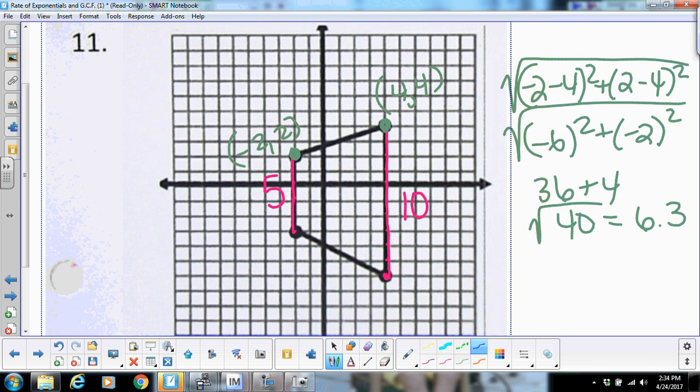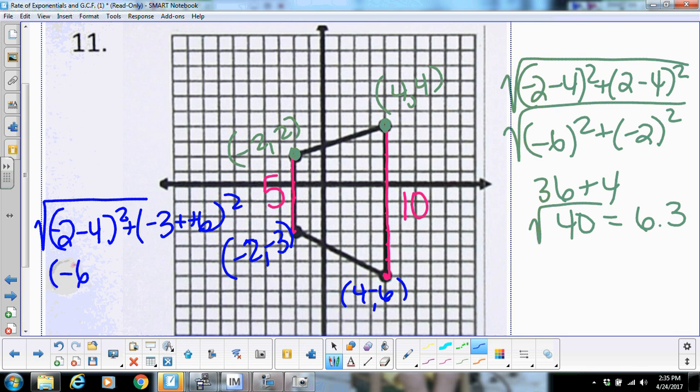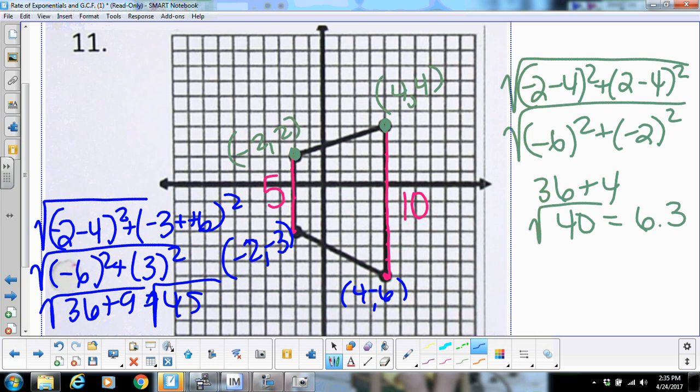And I'm going to do the same thing over here. This is going to be negative 2, negative 3. And this is going to be 4, negative 6. So the distance formula there is going to be negative 2 minus 4 squared plus negative 3 minus negative 6 squared. So that's going to give me negative 6 and 3, which gives me 36 plus 9 or 45. And the square root of 45 is approximately 6.7. So now we're just going to add up 5 plus 10 plus 6.3 plus 6.7. And that's going to give me 15 and 13 is 28.